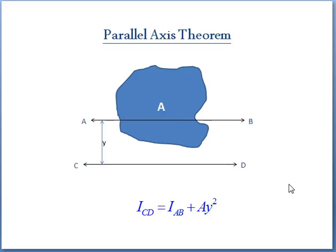The second theorem is parallel axis theorem. If you know the moment of inertia of lamina about a reference axis AB, to know the moment of inertia of a parallel axis which is at a distance of y, then the moment of inertia will be IAB plus Ay square. Remember, this formula to calculate the moment of inertia of a new axis which is parallel to the known axis moment of inertia.